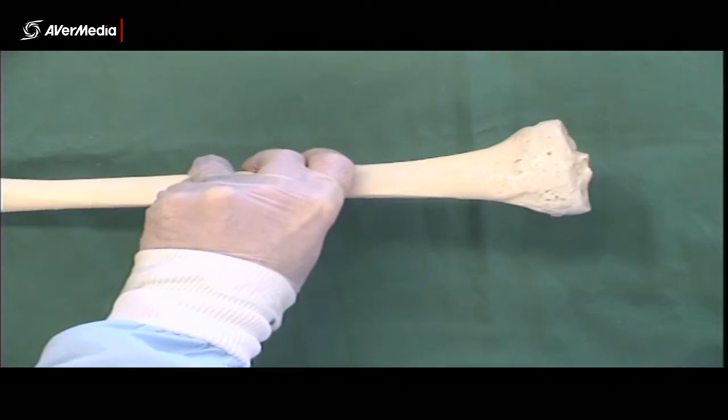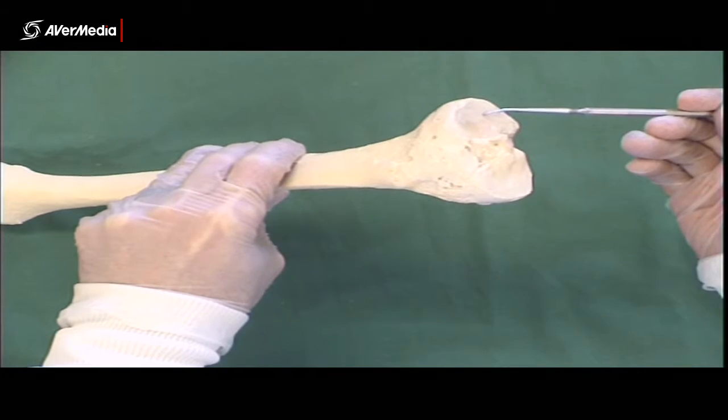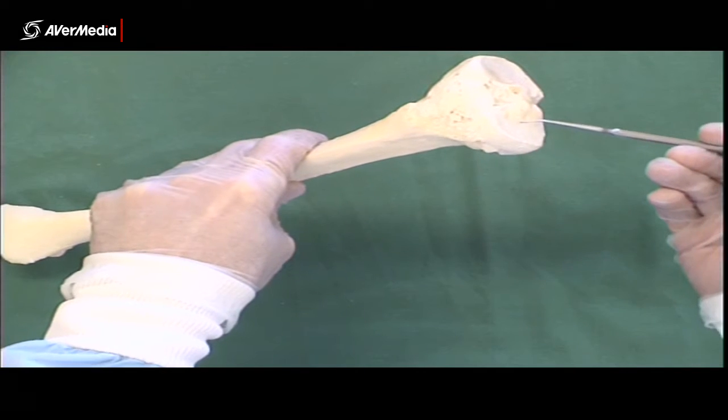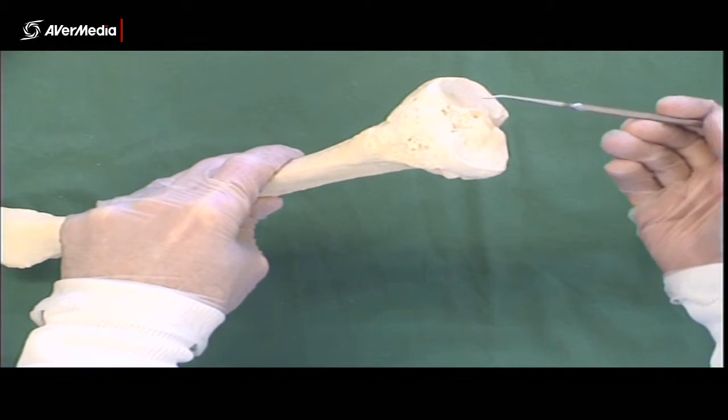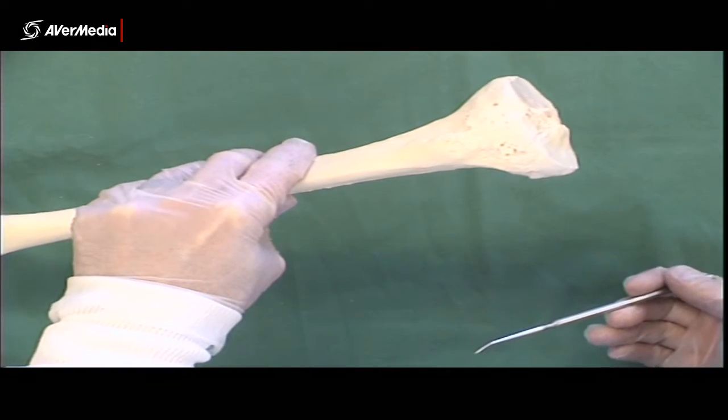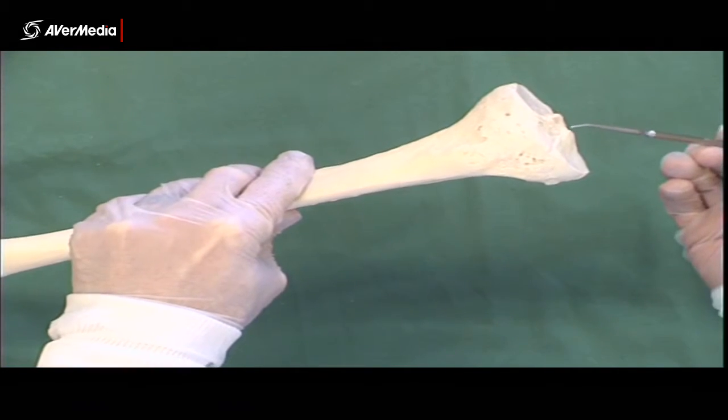Now if we then look at the proximal end, we can see we've got a medial tibial plateau, a smooth articular surface there, and a lateral tibial plateau. And in between the two plateaus, we have a couple of bumps which are tubercles, so you can see them sticking up there, so they're intercondylar tubercles.